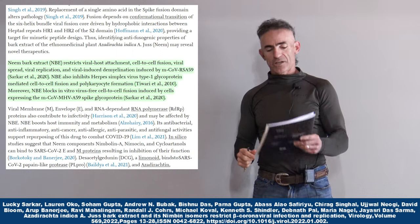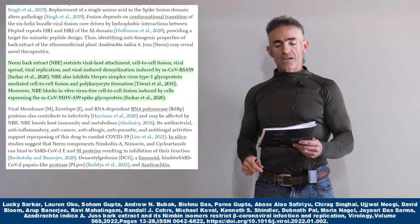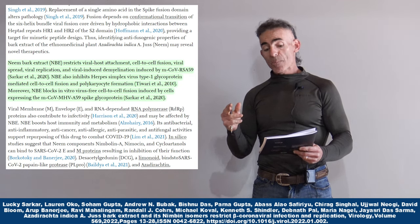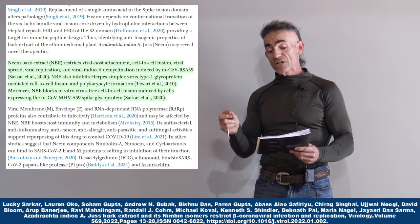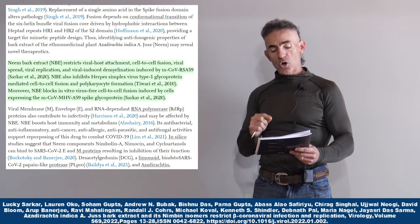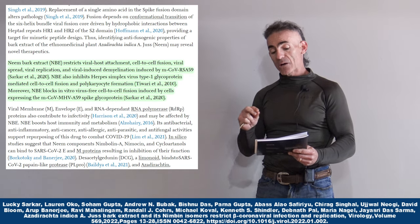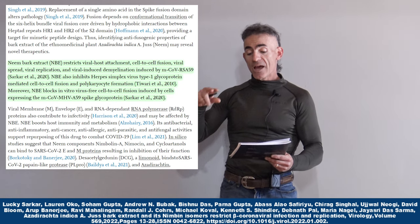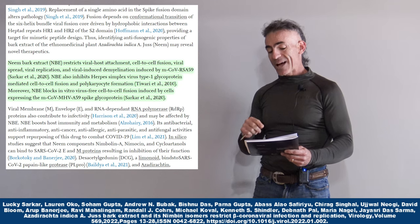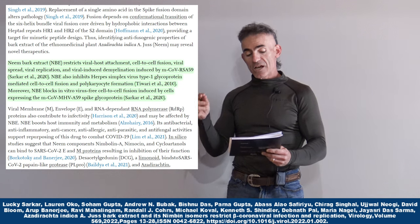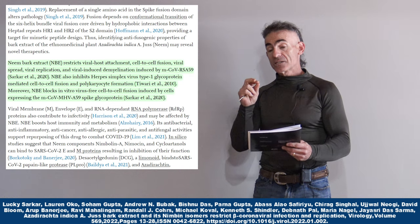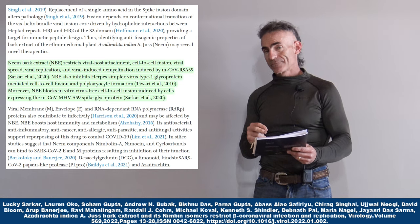Here's an excerpt from the full study: Neem Bark Extract restricts viral host attachment, cell-to-cell fusion, viral spread, viral replication, and viral-induced demyelization induced by MCOV-RSA59. Neem Bark Extract also inhibits herpes simplex virus type 1 glycoprotein-mediated cell-to-cell fusion. Moreover, Neem Bark Extract blocks in vitro virus-free cell-to-cell fusion induced by cells expressing the MCOV-MHV-A59 spike glycoprotein.